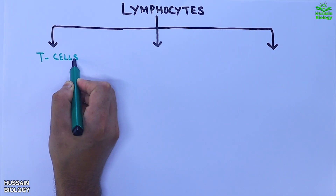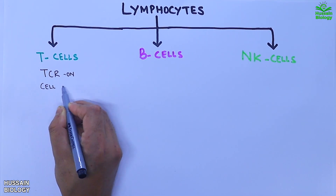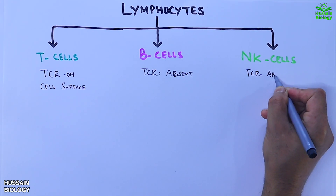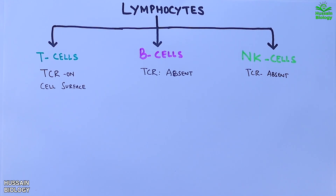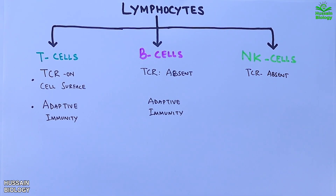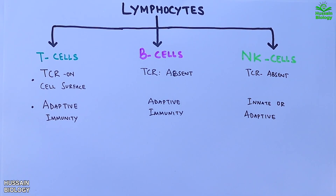The lymphocytes are categorized into three types: T cells, B cells, and NK cells or natural killer cells. The T cells have TCR on the surface, whereas B cells and NK cells do not have any TCR on the cell surface. T cells and B cells are involved in adaptive immunity, but NK cells are involved in both innate as well as adaptive immunity.